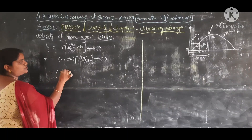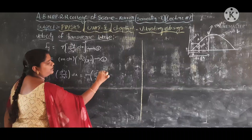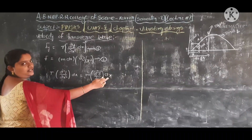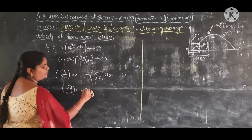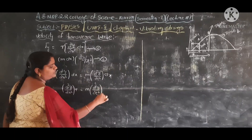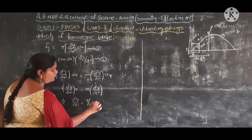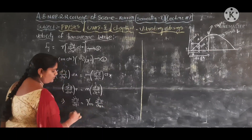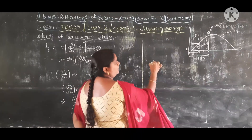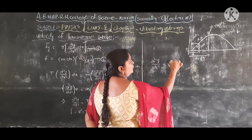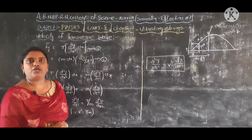Equating the two equations: T·(∂²y/∂x²)·dx = m·(∂²y/∂t²)·dx. Dividing both sides by dx: T·(∂²y/∂x²) = m·(∂²y/∂t²). Rearranging: ∂²y/∂t² = (T/m)·(∂²y/∂x²). This is the differential equation of the transverse wave in a string.